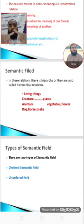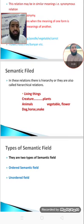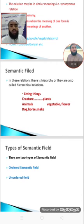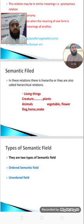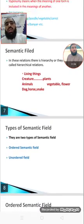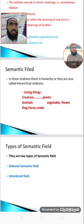For example, we have 'living things.' Living things have subcategories: creatures and plants. In creatures, we have animals. In plants, we have vegetables and flowers. In animals, we have dog, horse, snake. In dogs, there are further subtypes, and in horse there are subtypes as well. You can search in the book 'The Study of Language' by George Yule, chapter on Semantics.